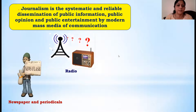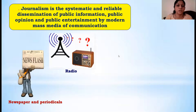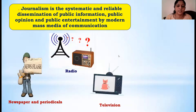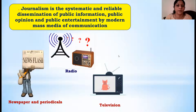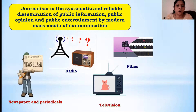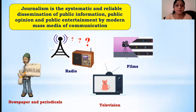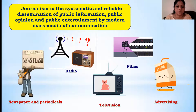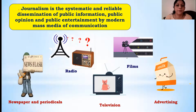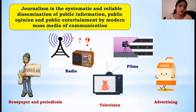The next mass media used for dissemination of information is radio. Radio is the basic unit through which people get information, and we can cover a large number of people in a short period of time through radio. The next one is television - the most attractive medium where you can both see and hear, making it widely accepted. The next one is films - short films, documentaries - used to educate people. And the next one is advertising, another means through which information is disseminated. These are the major five media through which information is disseminated to the public.